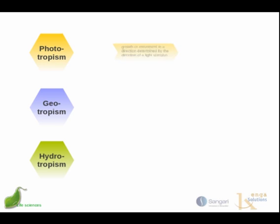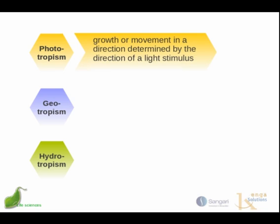Anyone who has ever grown plants near a window will have noticed that they lean towards the window — they lean towards the light, where the light is stronger than inside the room. This is called phototropism: the growth or movement determined by the direction of a light stimulus. Growth towards a source of light is called positive phototropism and growth away from a source of light is called negative phototropism. The tips of shoots are usually positively phototropic while the tips of roots are negatively phototropic.